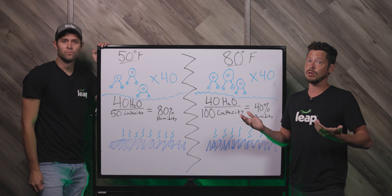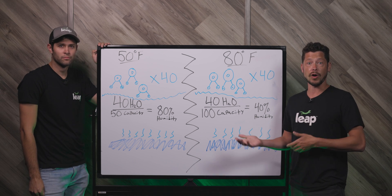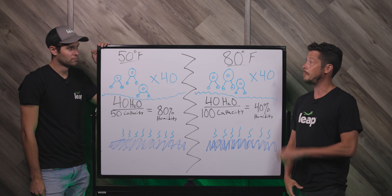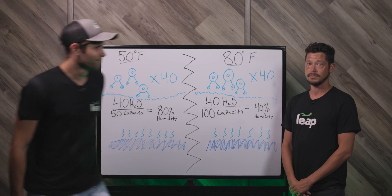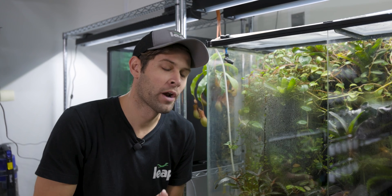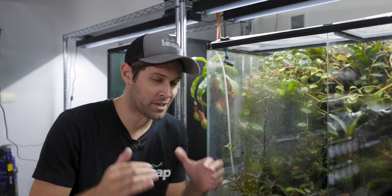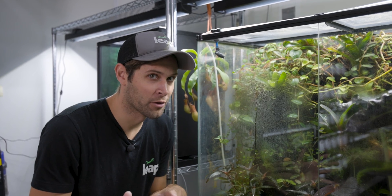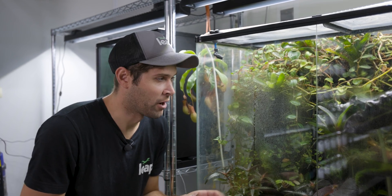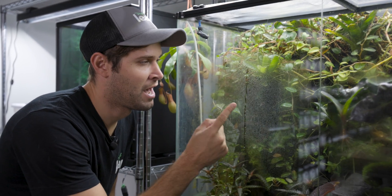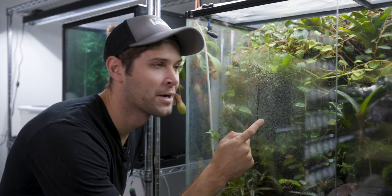So what do we do? We mist or fog again to bring the humidity back up to where we want it. Back to the reptile room — we just saw what happens throughout the day as the temperature goes up and relative humidity comes down. But what happens in the evening as the temperature starts to come back down? All that water that was in the air has to go somewhere, and we see it here through condensation.